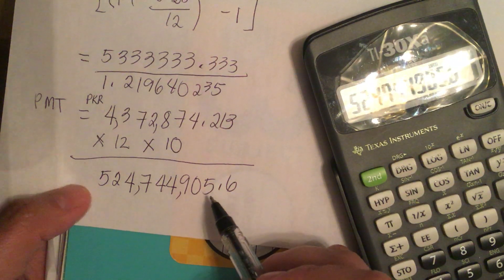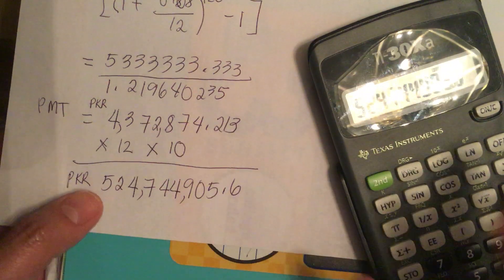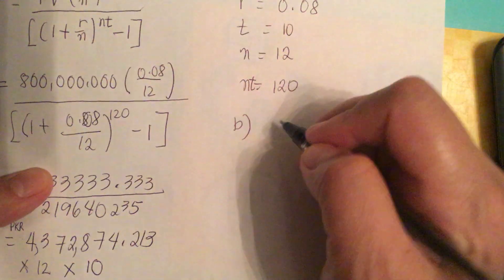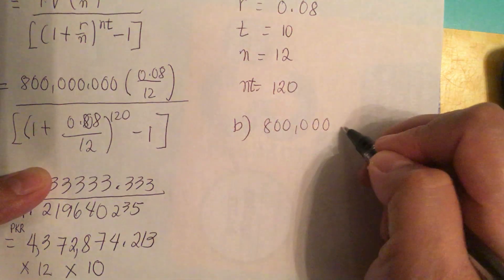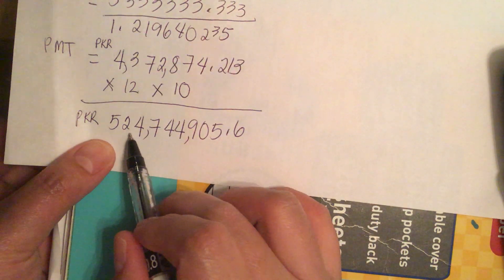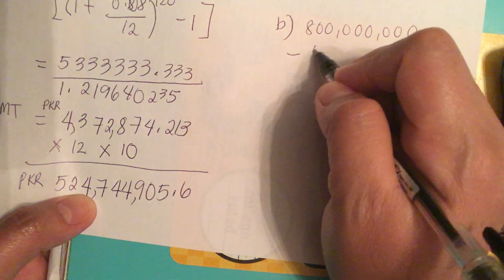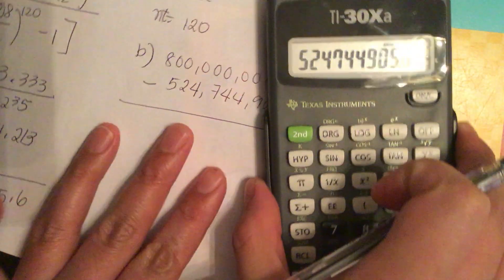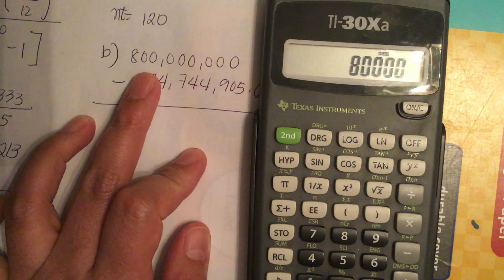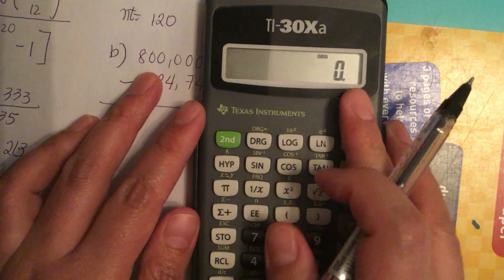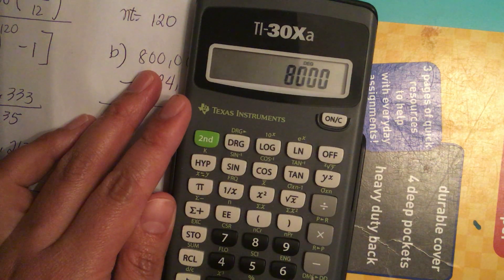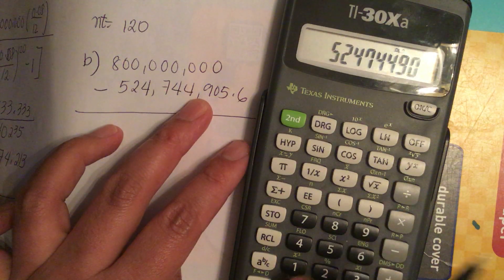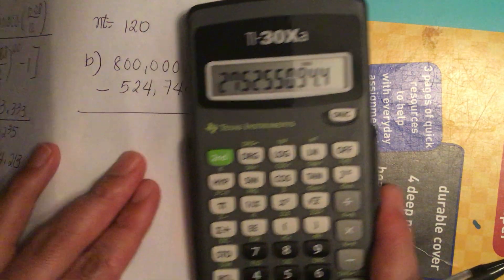So the total payment is 524 million, 744 thousand, 905.6. Now to find the interest for part B, we take the future value which is 800 million and subtract 524,744,905.6. This difference is the interest.